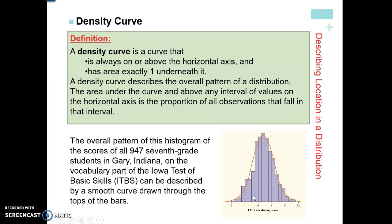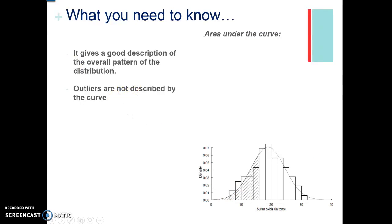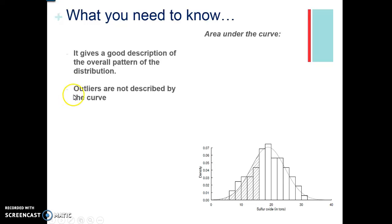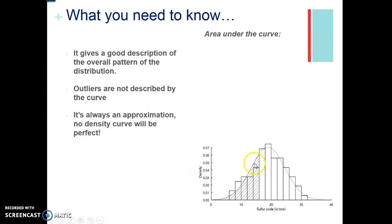Since this curve represents an area, we can't find the percentage that just have a score of four. Remember, area has to have a length and width — if we just have a score of four, that's basically just the height, and height alone doesn't help us. A density curve gives a good description of the overall pattern of the data. Outliers are not usually described by the density curve — if an outlier is way out here, that's usually not part of the pattern. It's always an approximation because no density curve is going to be perfect. You can kind of fill in the bars that stick out, but it might not be exact.